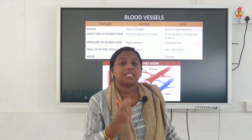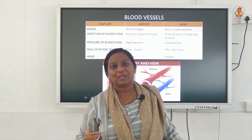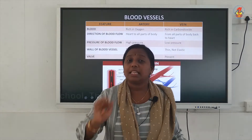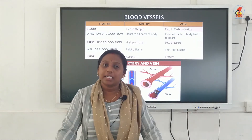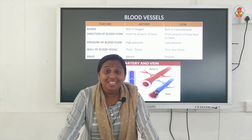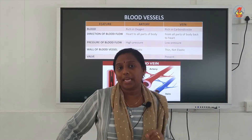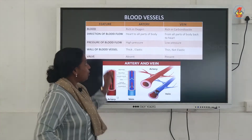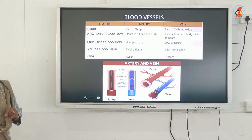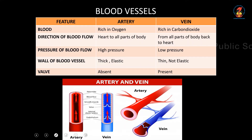Blood vessels are the pipes in our body which carry the blood. There are three different types of blood vessels: arteries, veins, and capillaries. Now we will study the difference between an artery and a vein. Arteries carry blood which is rich in oxygen. The blood which is rich in oxygen, you call it pure blood.